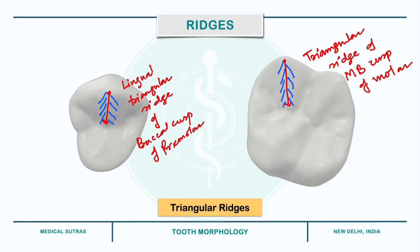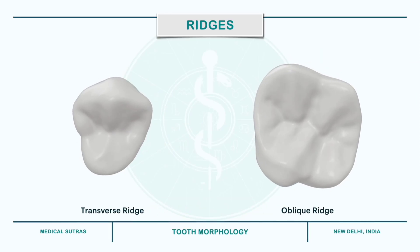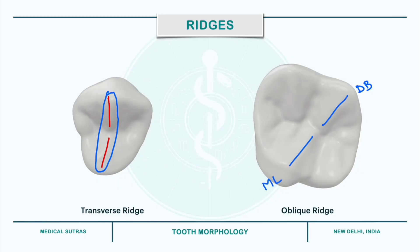Transverse ridge is formed by the union of the triangular ridges crossing transversely across the surface of posterior teeth. For example, in this upper premolar, the transverse ridge is formed by the lingual triangular ridge of the buccal cusp and the buccal triangular ridge of the lingual cusp. On the other hand, oblique ridge is formed by the triangular ridge of the disto-buccal cusp and the triangular ridge of the mesial lingual cusp, and it crosses the occlusal surface in an oblique direction. The oblique ridge is commonly seen in maxillary molars.